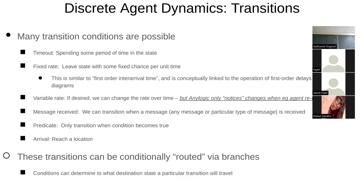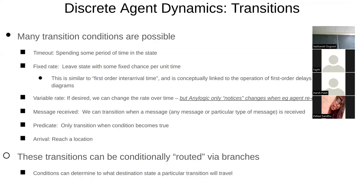A message transition: an agent receives a message — for example, being exposed to an infected person and rolling a chance of infection. It's asynchronous, not pre-scheduled, determined at runtime. It could represent spread of infection, spread of disinformation or conspiracy theory, a person engaging in behavior where another person engages in imitative behavior — someone offers a cigarette, for instance. A predicate or conditional transition: you only transition when a certain condition becomes true in the model. Maybe once my viral load reaches a certain level, I'll go to the hospital for care. And an arrival transition: when I arrive at a certain place, I'll transition out.